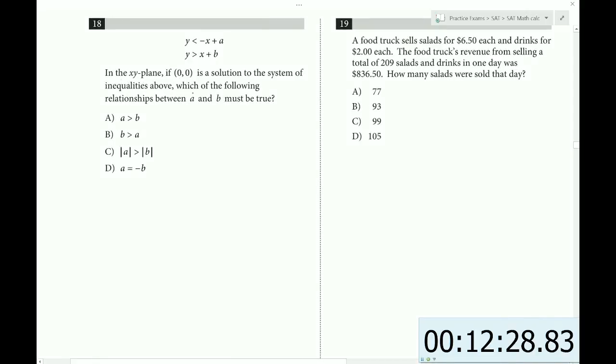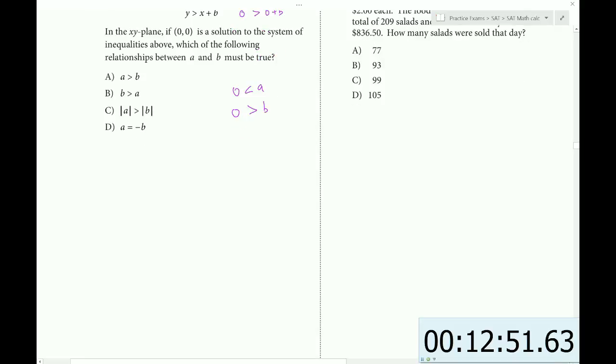In the xy-plane, (0,0) is a solution to the system of inequalities above. Which of the following relationships between A and B must be true? So what we can do is plug in (0,0). Zero greater than zero plus B. So from the first line, we would ascertain that zero is less than A. And from the second line, we would ascertain that zero is greater than B. So zero is less than A, and zero is greater than B. So if we put zero on a number line, A would go on this side, and B would go on that side. So in fact we can ascertain from that that B would be less than A via the transitive property. And so therefore if we flip that, we'd get A is greater than B, and that's choice A.